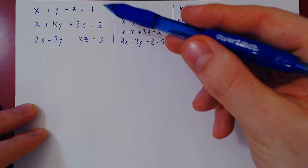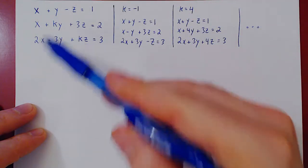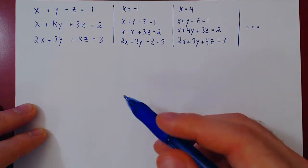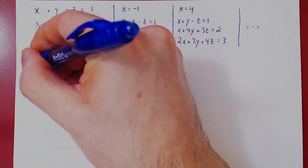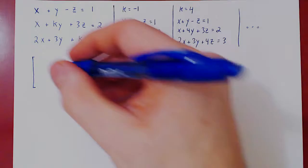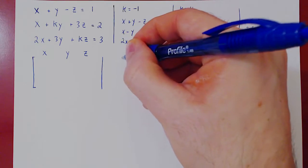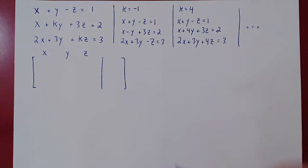To do this, we have to try and row reduce the linear system, keeping k as a parameter, and keeping in mind two things. Which variables are free? Which variables are leading? And then we have to watch for possible inconsistencies. That is, when there is a row of zero coefficients and a non-zero constant. So let's look at the corresponding augmented matrix and figure out how this will play out.